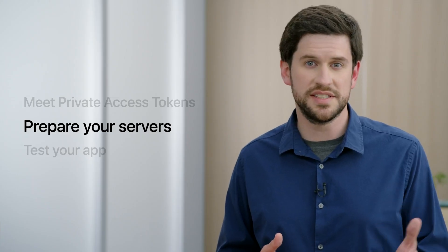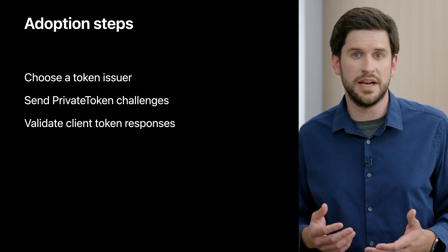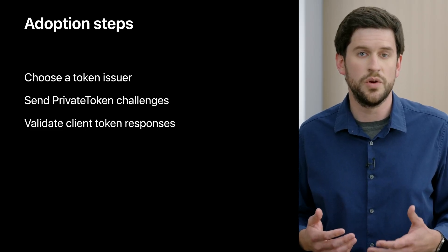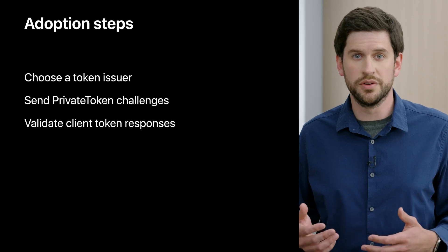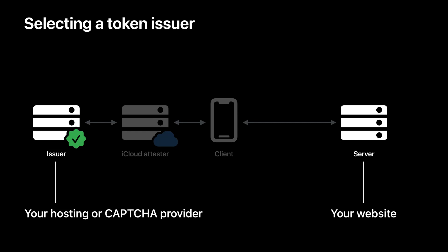How can you take advantage of this technology on your servers? There are three steps to adopting private access tokens on your server. First, you'll need to select a token issuer. Second, your server will need to send out HTTP authentication challenges when you want to validate clients. And third, your server will need to validate the tokens sent by clients. The token issuer you select is a trusted provider that can sign tokens that your server validates — this may be your existing CAPTCHA provider, your web hosting service, or your content delivery network, also called a CDN.